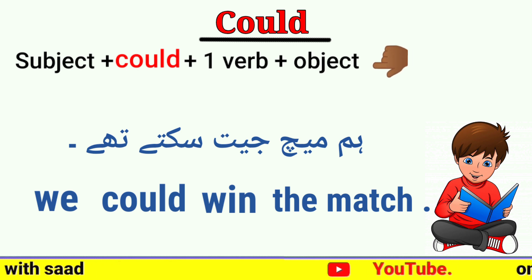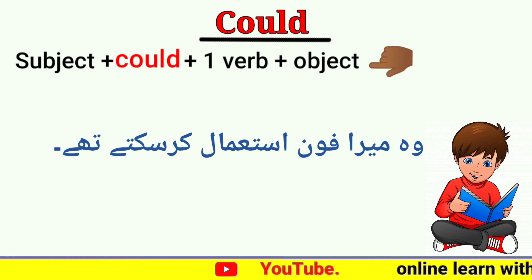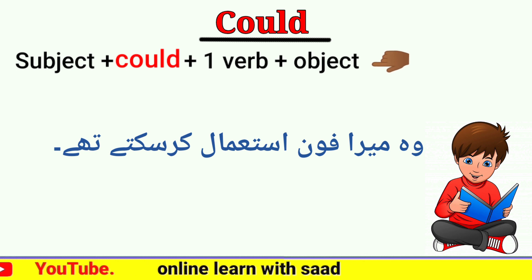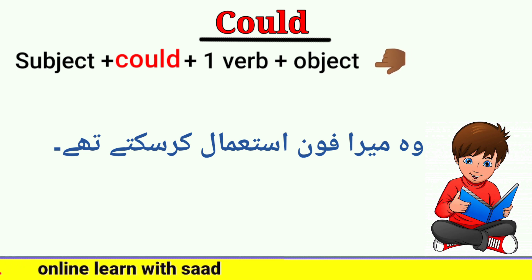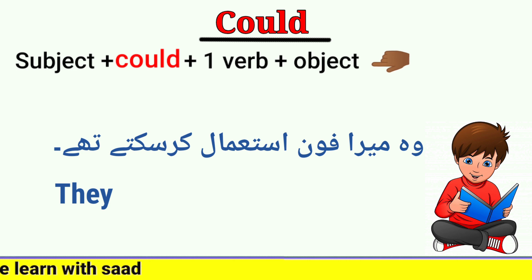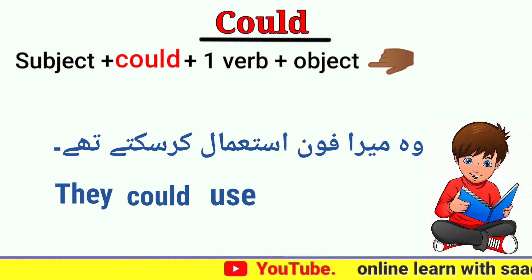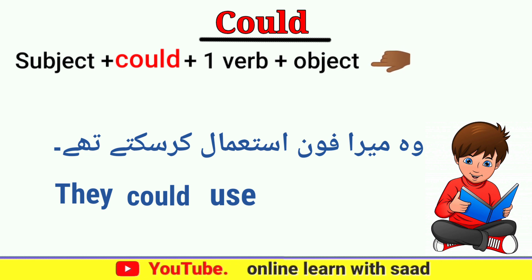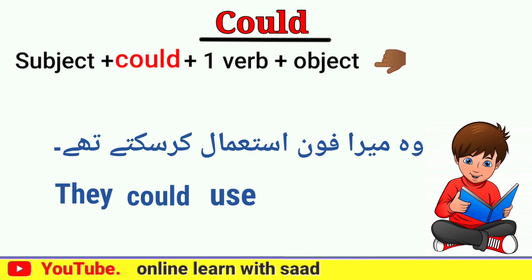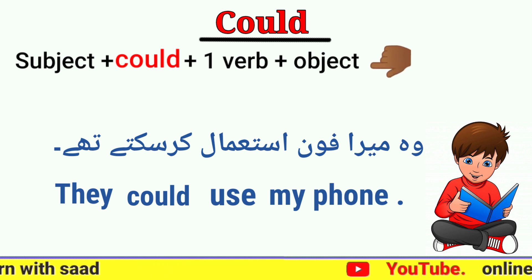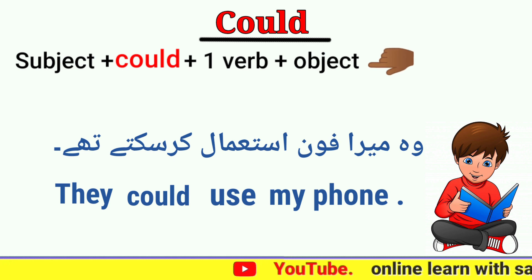'وہ میرا فون استعمال کر سکتے تھے' — subject 'وہ' یعنی they، پھر could، پھر verb 'استعمال کرنا' یعنی use، پھر object 'میرا فون' — They could use my phone۔ I hope آپ لوگوں کو positive sentences سمجھ میں آئی ہوگی۔